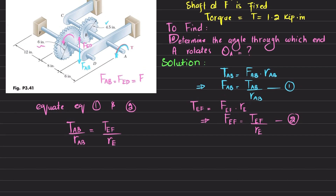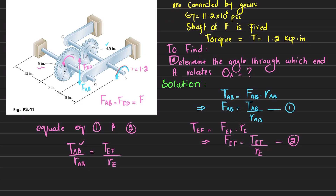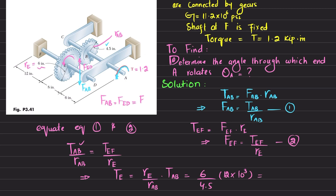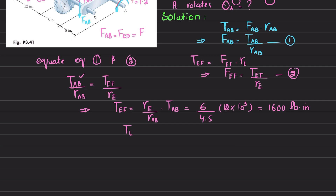We have T_AB which is given as 1.2 kips, R_AB is 4.5 inch, and R_E is 6 inch. We will find T_EF: T_EF equals (R_E / R_AB) × T_AB. Putting in the values: (6 / 4.5) × 1200 pounds·inch. This gives T_EF equal to 1600 pounds·inch. So the torque in shaft EF is 1600 lb·in.